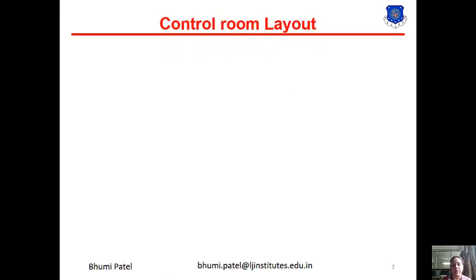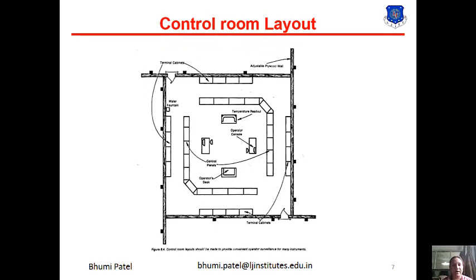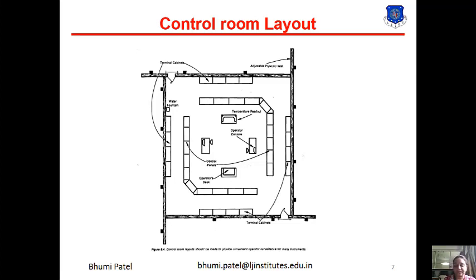The next one is the control room layout. In this diagram, a control room layout is shown — two control panels are given, one operator desk is shown where controlling takes place, this is the temperature readout section, and this is the operator console section. The outer layer of the control room is connected with the terminal. The design of the control room and control panel varies greatly from one company to another and from one plant to another because the control room layout changes with each plant.